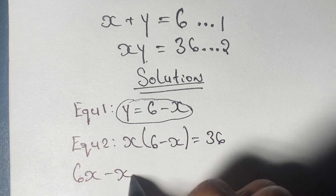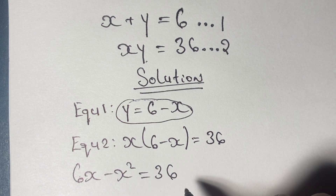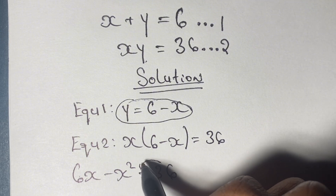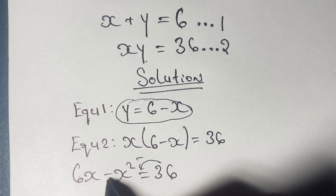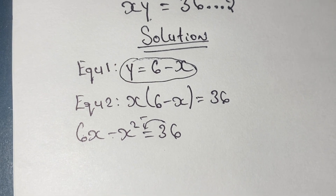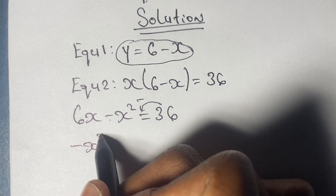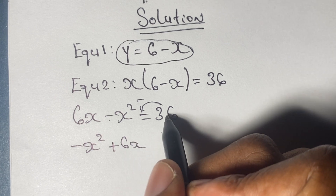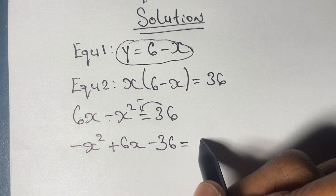Now we expand our brackets and we have that equal to 36. We take this 36 and bring it over to the left hand side of the equation — it's a positive so it comes over as a negative. We switch negative x squared and 6x so we have negative x squared at the front. So we have negative x squared plus 6x minus 36 equal to zero.